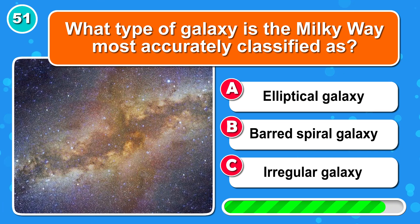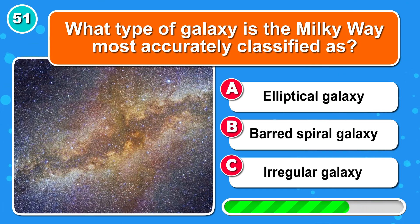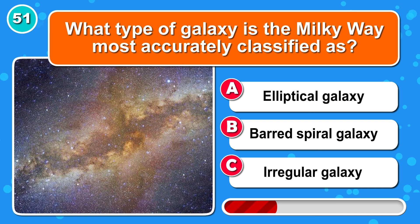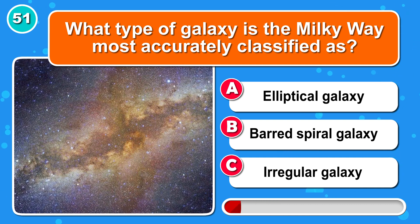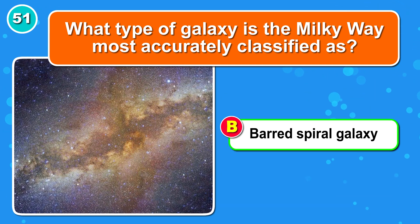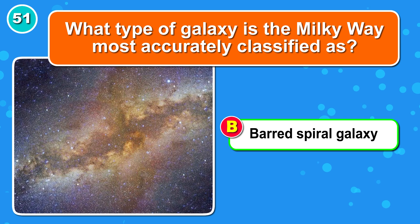What type of galaxy is the Milky Way most accurately classified as? It's B: a barred spiral galaxy.